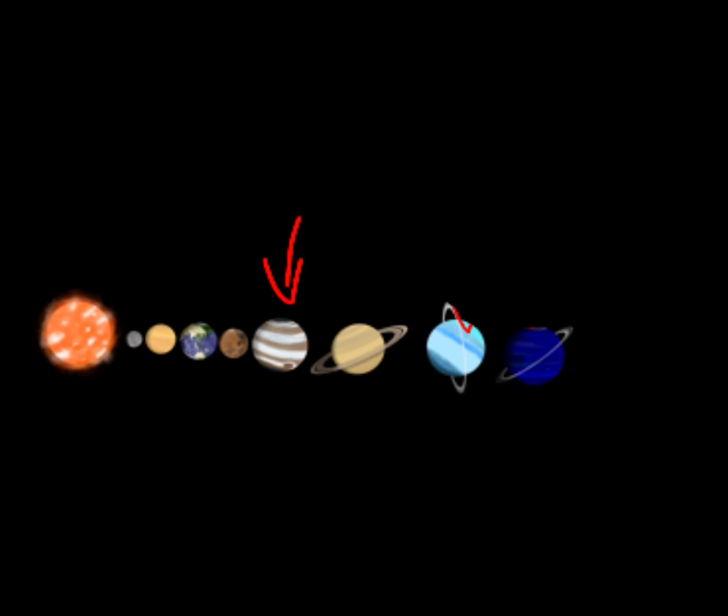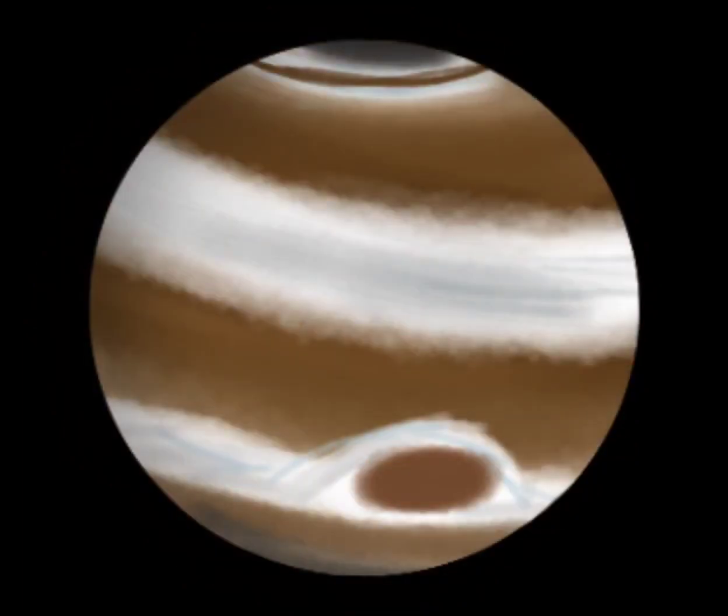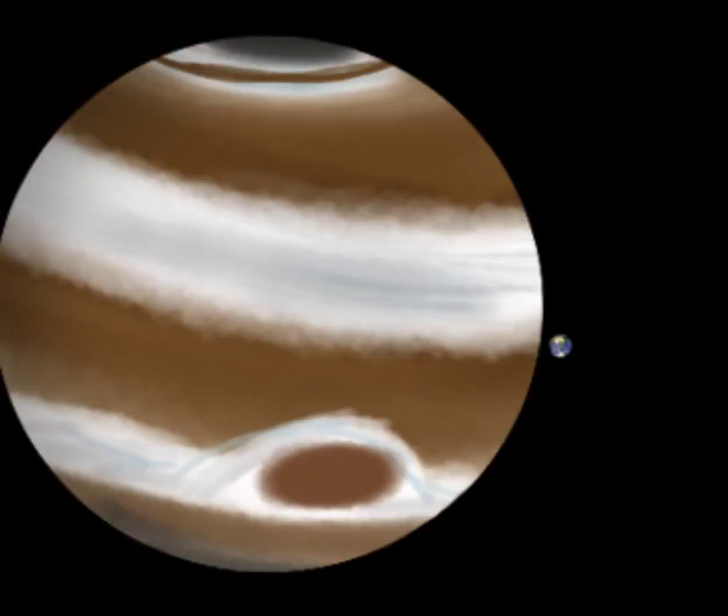Jupiter is the fifth planet. It's the largest one—bigger than all the others combined, but only a thousandth the mass of the Sun. It's a gas giant, so it has no ground on which to stand, but that doesn't mean its surface is bland. The Great Red Spot is a giant cyclone on its surface. It's centuries old and huge, bigger than the Earth.